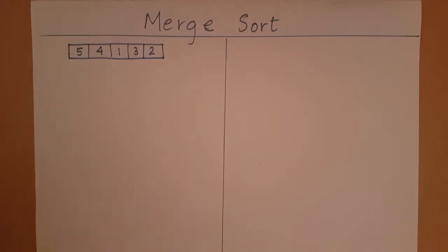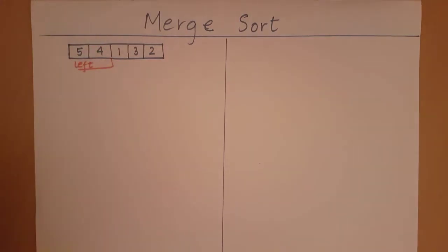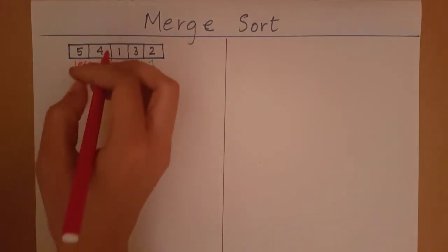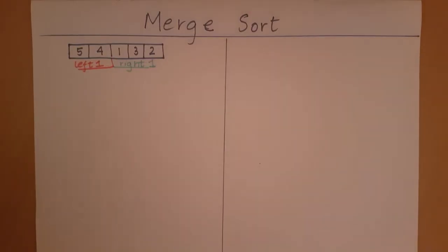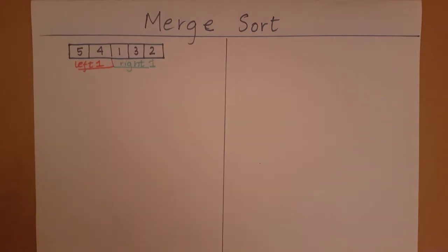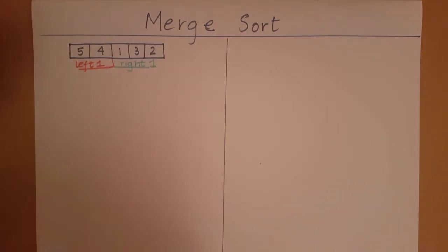The first thing merge sort does is divide this array or list into a left and a right subpart. This left and right could have also been divided as three elements and two elements — that is completely up to your implementation. What merge sort says is that if you are able to sort the left subset and the right subset, it can merge these two arrays into a larger array in sorted fashion. So once left is sorted and right is sorted, we can merge these two sets into a larger sorted set.